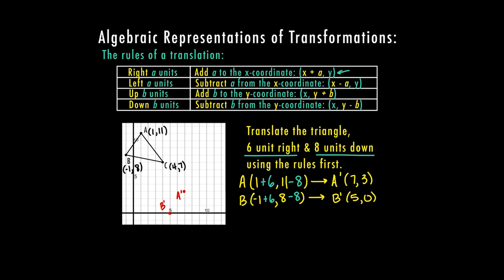For my last point, C: x is 4 and I add 6, y is 7 and I subtract 8. So my new C prime is at (10, -1). I go to 10, negative 1 on the graph — there's my C prime.